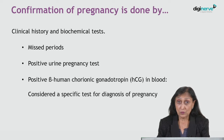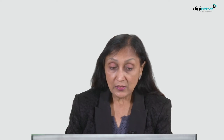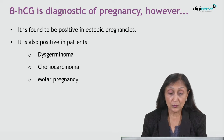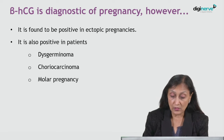Confirmation of pregnancy is done by missed periods, positive urine pregnancy test, and positive beta-HCG in blood. Beta-HCG is considered a specific test for pregnancy, but it is also positive in ectopic pregnancies and lesions like dysgerminoma, choriocarcinoma, and molar pregnancy. That means you need ultrasound to confirm that it is an intrauterine pregnancy.